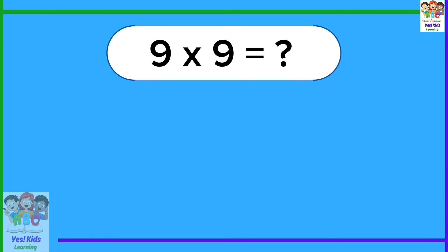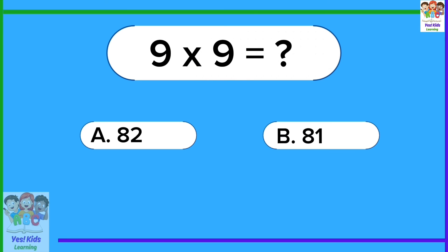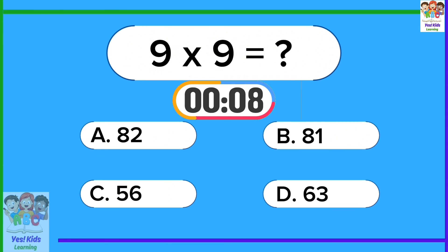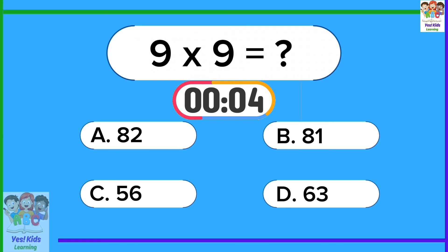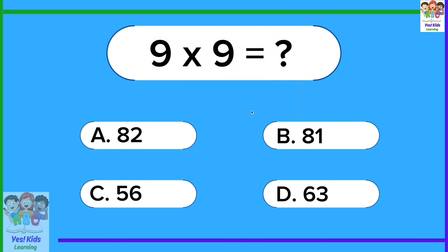9 times 9 equals? 81. 9 times 9 equals 81.